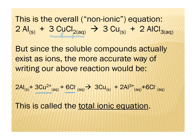Why six? Because in our non-ionic equation, we have three moles of copper chloride, but each mole of copper chloride has two moles of chloride. So we're going to get six moles of chloride ions. Similarly, on the product side, we see that we have two moles of aluminum chloride. Each mole of aluminum chloride gives you one aluminum ion, so we have two aluminum ions. And each mole of aluminum chloride has three chloride ions, and we have two moles of aluminum chloride, so we have six moles of chloride ions.